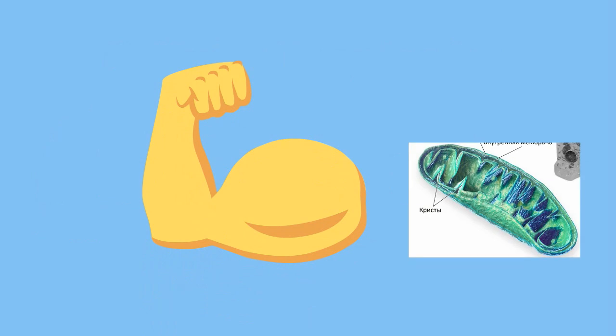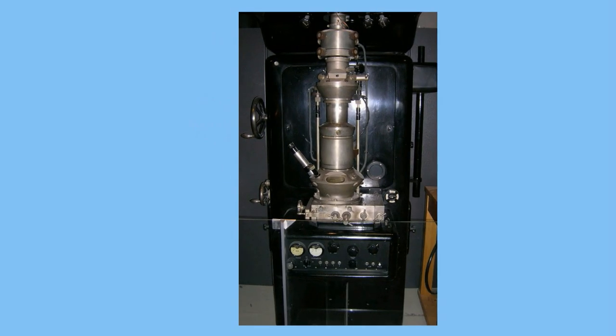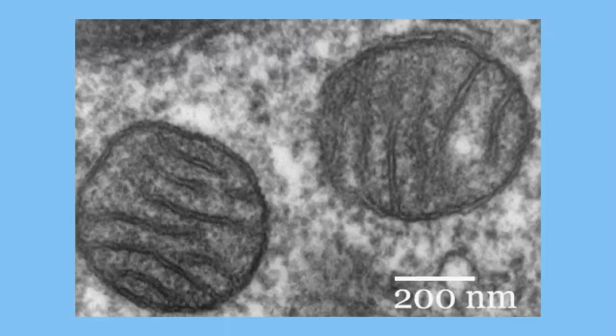You cannot see mitochondria with a normal light microscope. You need an electron microscope. Here is a picture of a mitochondria under an electron microscope.